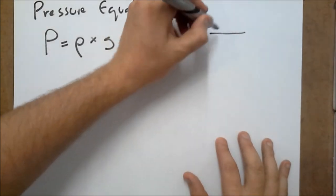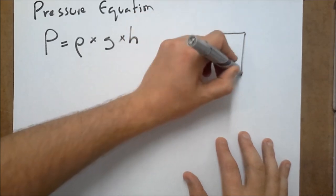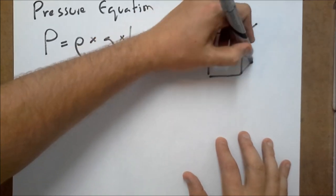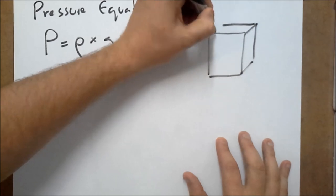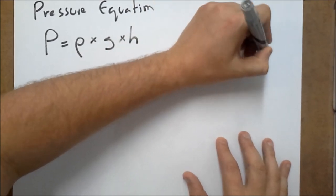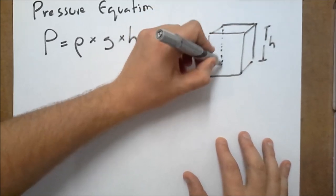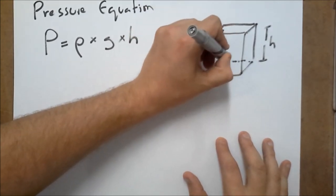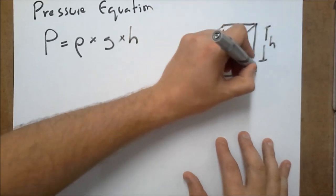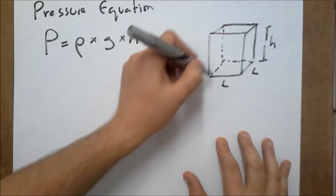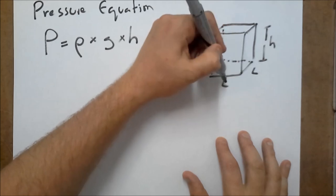Now, starting off, start off with a cube of our liquid and it's got a height, h. It's got a length and a width we're going to call l.